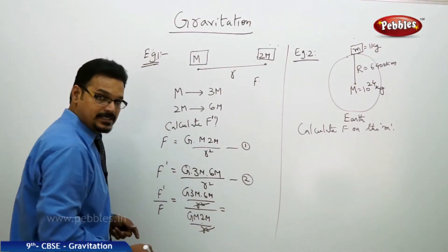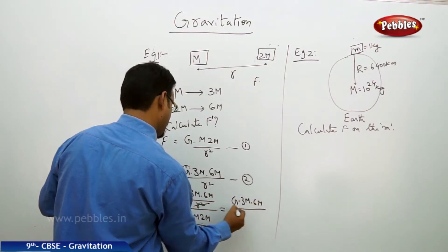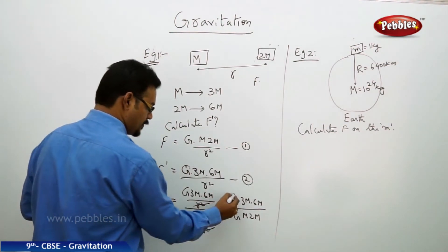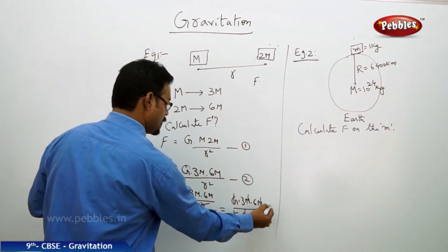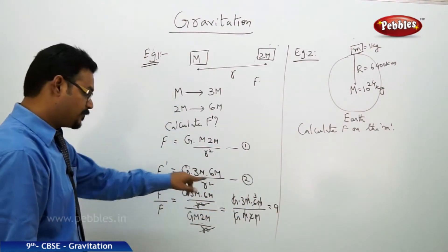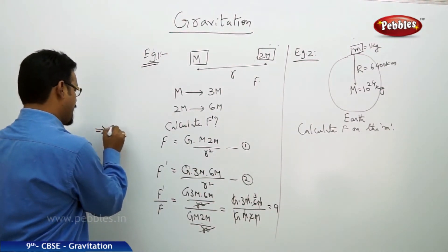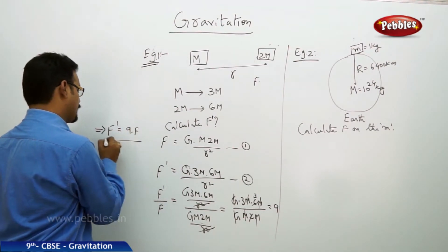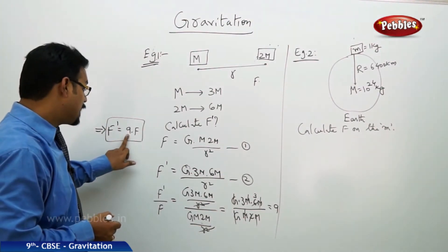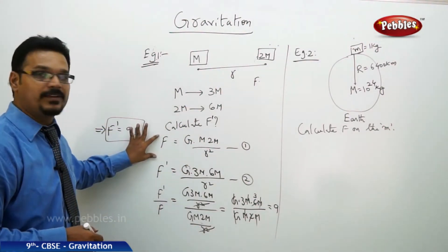Now if you start simplifying this, r square r square cancelled, and then you're left with G 3m 6m by G m 2m. G's cancel, m m m cancel, you got 2, 3, 6, 9 if you simplify. So the answer is f dash equals to 9 into f. So the new force is 9 times the old force f.